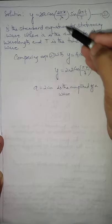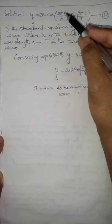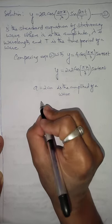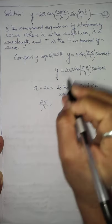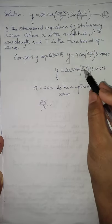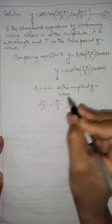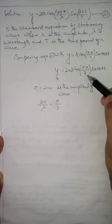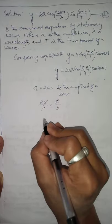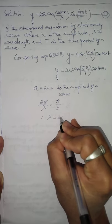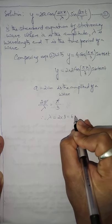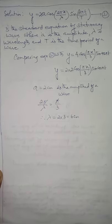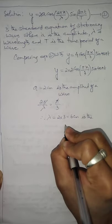Comparing the cosine terms, 2π/λ equals π/3. The π's cancel, and cross-multiplying gives λ = 2 × 3 = 6 centimeters. So the wavelength is 6 centimeters.